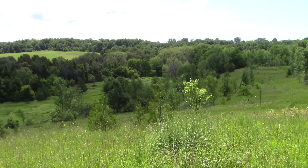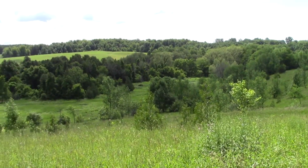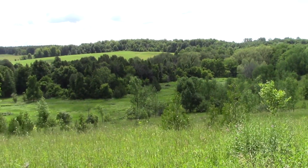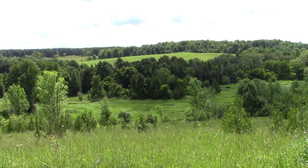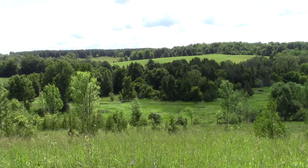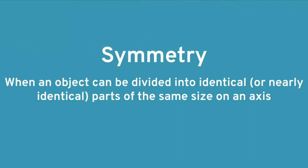You are taking a walk in nature, enjoying the bugs, birds, and leaves, when you start to wonder: why are so many things in nature symmetrical? An object is symmetrical when it can be divided into identical, or nearly identical, parts of the same size on an axis.